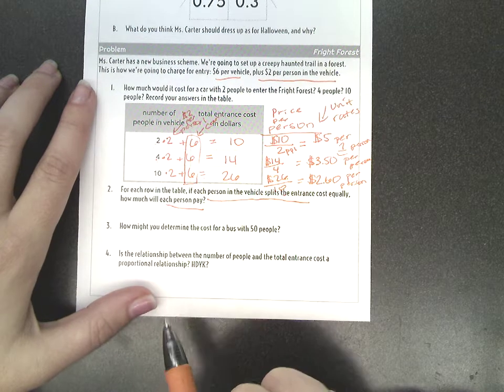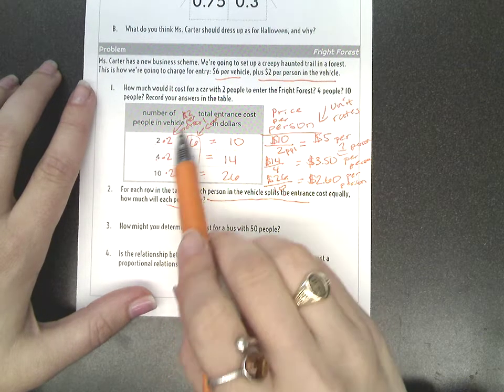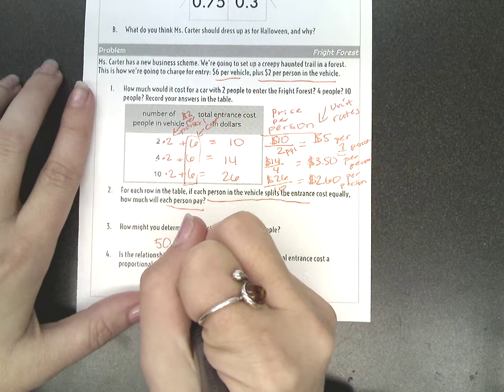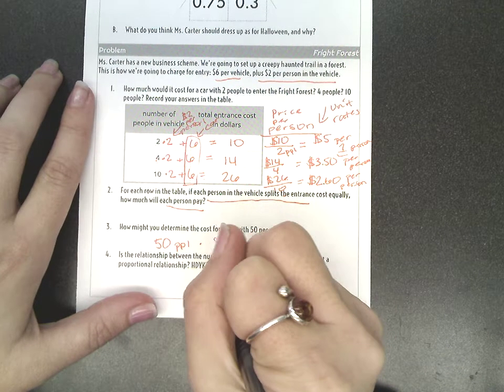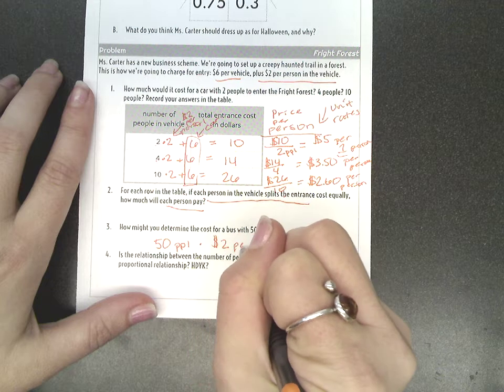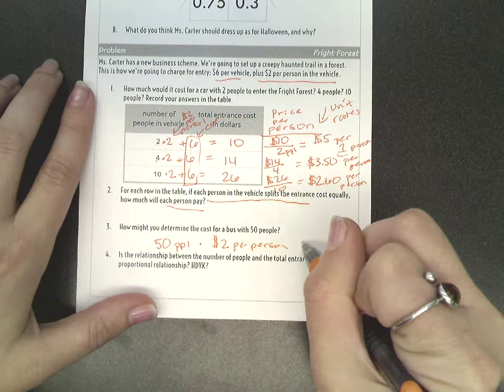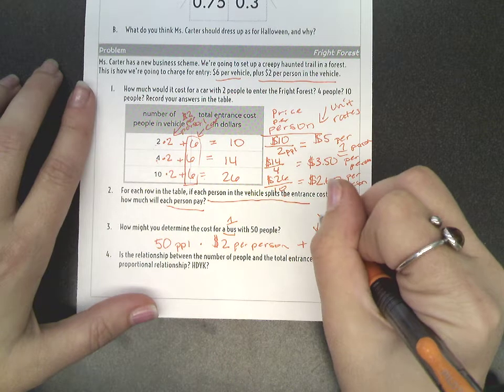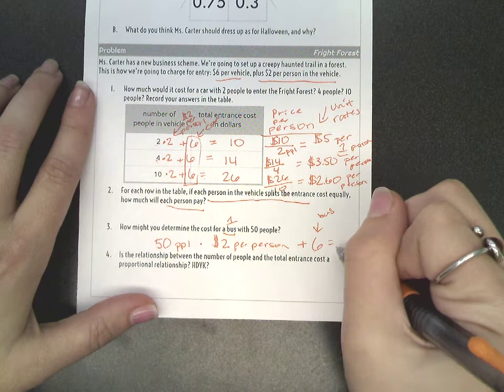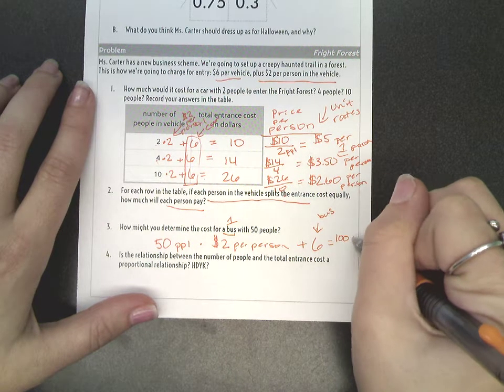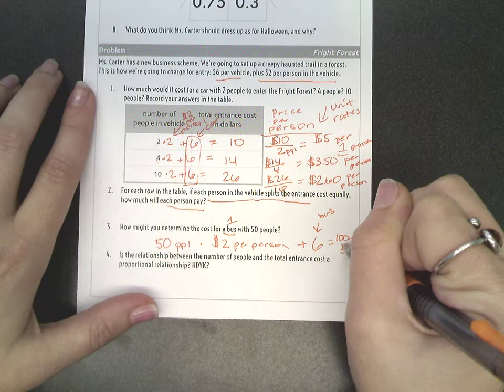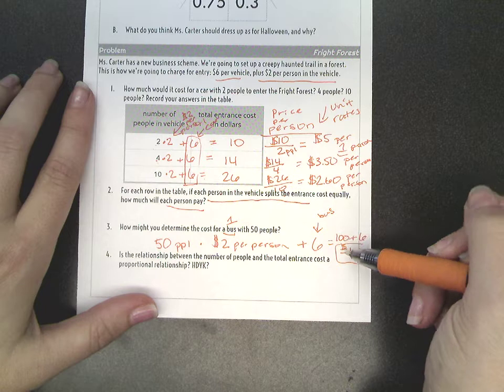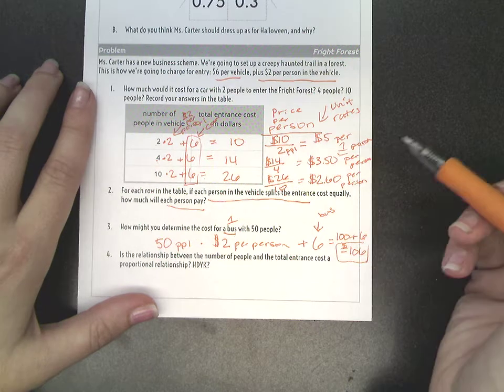So if we wanted to get the cost for 50 people, we could use this rule that Sierra was telling us. We have 50 people, each person is going to pay $2, so we can multiply $2 per person. And then it's one bus, so it's $6 for our bus fee, which tells us we'll have 100 plus 6, which is $106. And if we wanted to figure out the unit rate, the price per person here, then we could do 106 divided by 50 people.